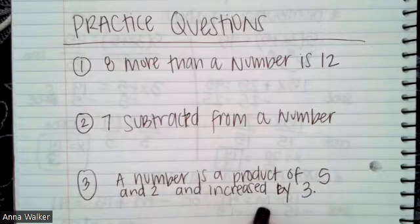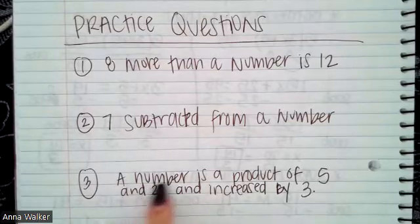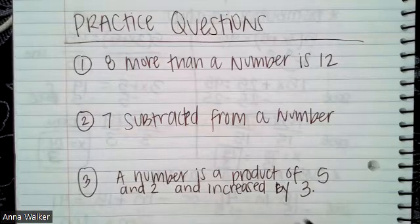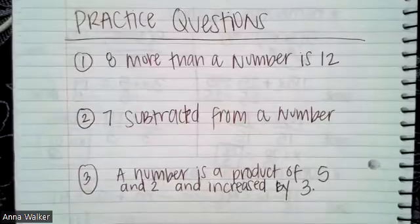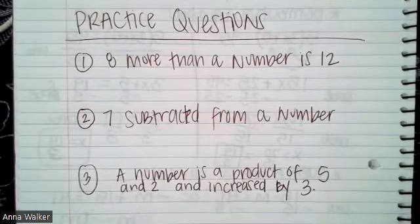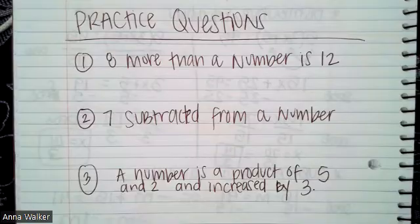And then the third one says a number is a product of five and two and increased by three. So this has multiple operations involved with it. And if you want, you can use parentheses to indicate this first part, a product of five and two. So you could put that in parentheses and then show how you're going to increase by three. What kind of operation will you have to do to increase by three? Just a suggestion. You can check your answers in the table of contents. And as always, please feel free to ask questions of your teacher if you need help. Have a great day.